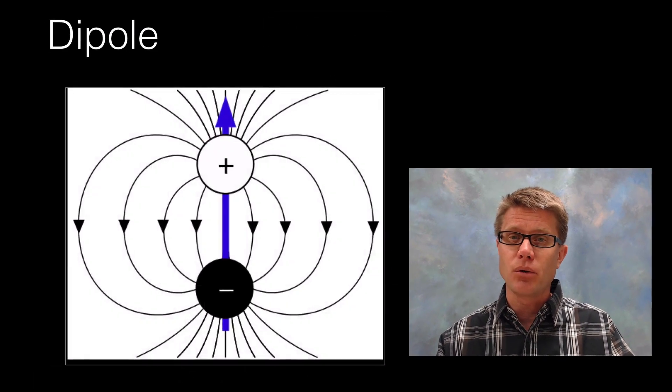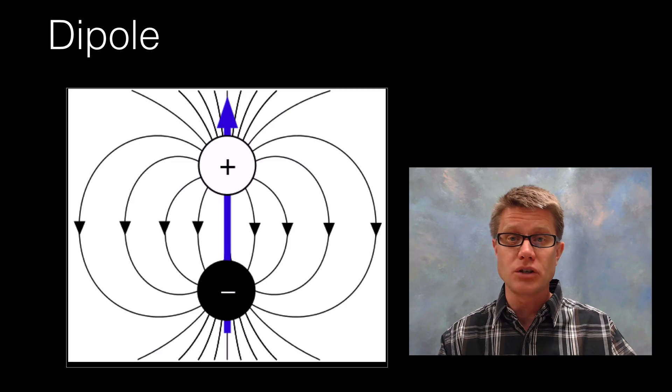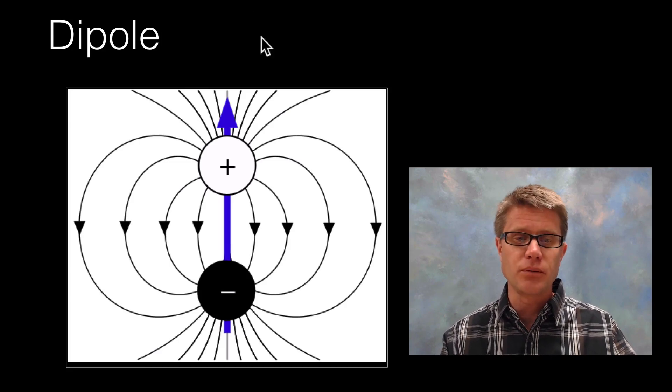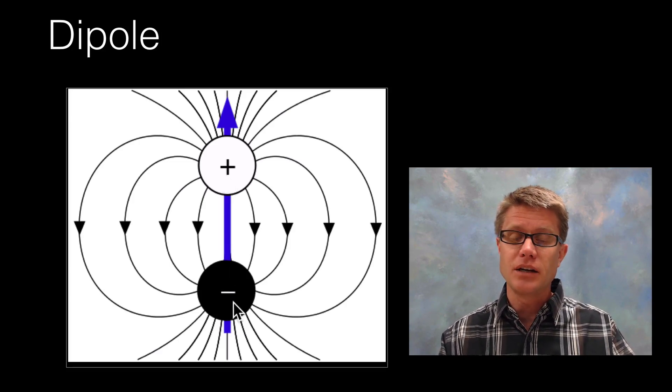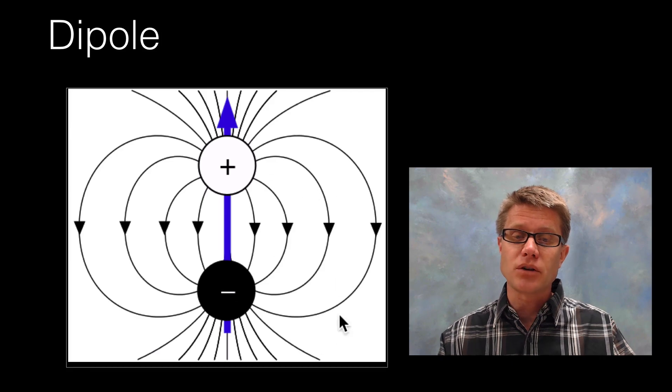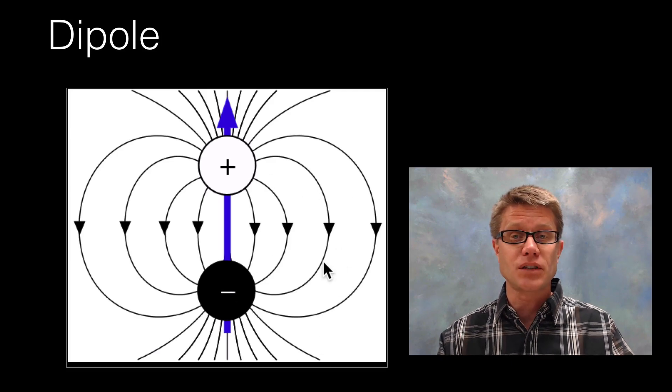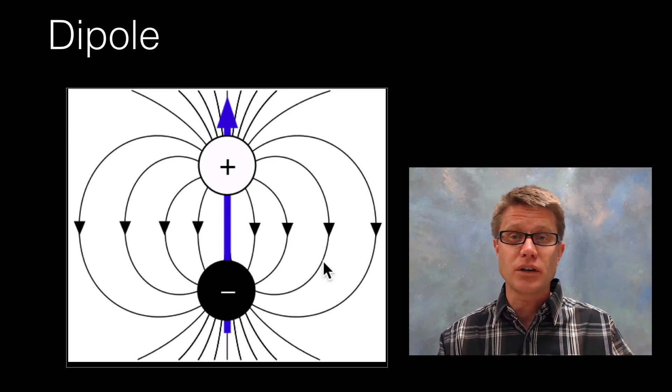To understand what a dipole is it simply means two charges. If we were to look at an electric dipole, right here we have a positive charge and a negative charge. And then we have electric fields that form around the outside of it. So this is an electric dipole.